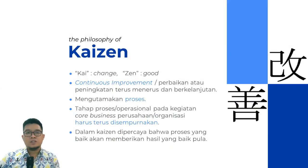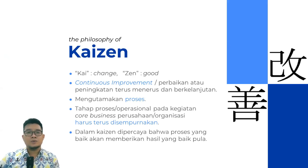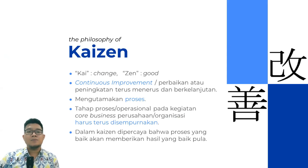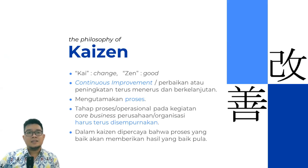Pertama, kita perlu ketahui terlebih dahulu tentang filosofi dari Kaizen. Kaizen ini terdiri dari dua suku kata, yaitu Kai yang berarti berubah, dan Zen yang berarti dengan bagus. Definisi dari Kaizen ini adalah continuous improvement, atau perbaikan ataupun peningkatan terus-menerus dan berkelanjutan. Kaizen ini lebih mengutamakan proses untuk menghasilkan hasil yang lebih baik.